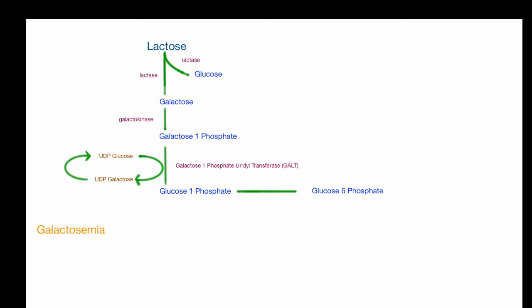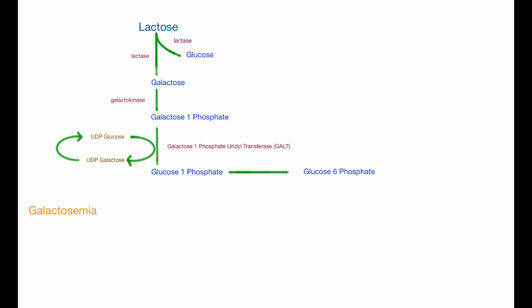If we start to think about this systematically, we can understand how these kids are going to present. So if the GALT, if there's a deficiency there, there's a toxic buildup that's going to happen. There's going to be an accumulation of galactose 1-phosphate.